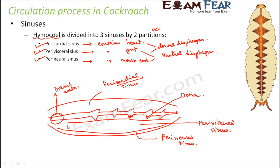The ostia are the pores present on the heart chambers. There are also muscular structures called alary muscles. The contraction and expansion of these alary muscles help the blood to move from one region to another.